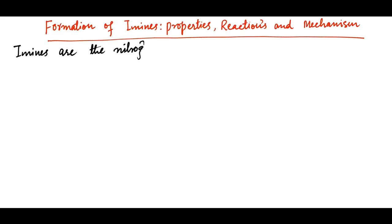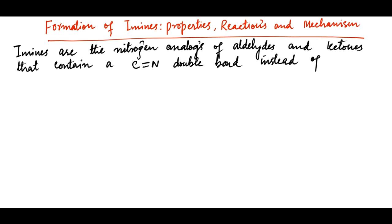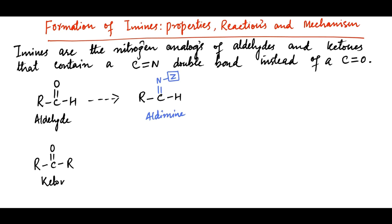Imines are the nitrogen analogs of aldehydes and ketones that contain a C=N double bond instead of a C=O double bond. For example, the corresponding imine of this aldehyde will be this, called aldimine, and that of ketone will be like this, called ketimine. But the general term used for these is imine.